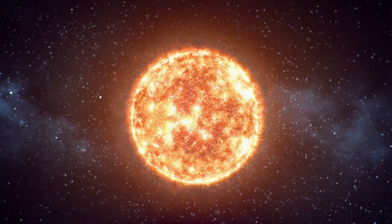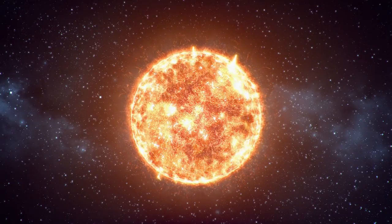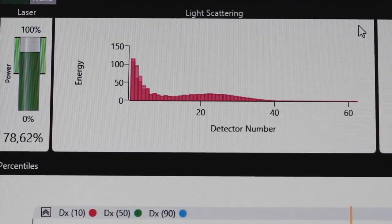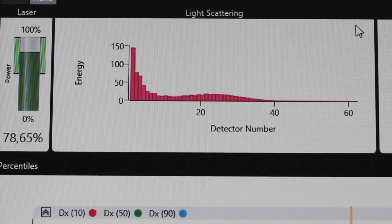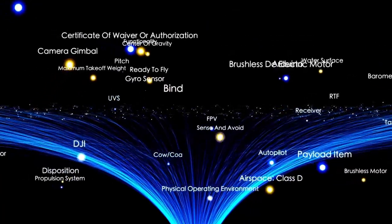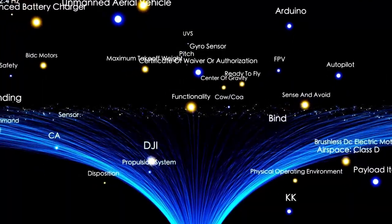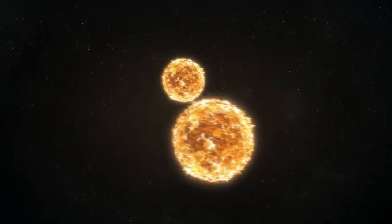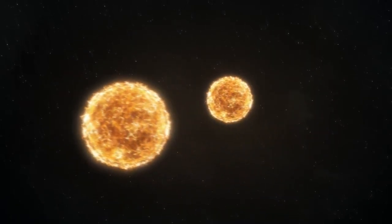Just when things couldn't get stranger, Webb found something even more outrageous. At the heart of one of these ancient galaxies sat a supermassive black hole, weighing more than a billion suns. In today's universe that would be astonishing, but in the early universe it was cosmologically absurd. Black holes are thought to grow slowly, over billions of years, by feeding on gas, dust, and stars. Even the most optimistic growth models can't explain how such a monster could exist within just 400 million years. It would be like finding a fully grown adult who was born an hour ago. And yet, there it was. The evidence was undeniable.